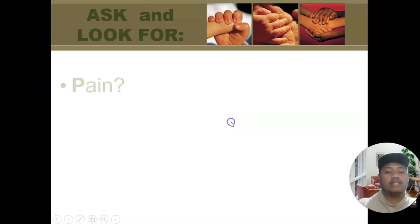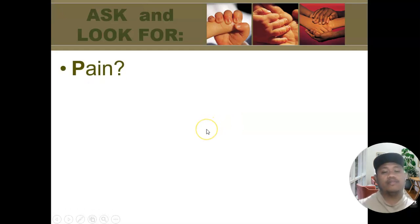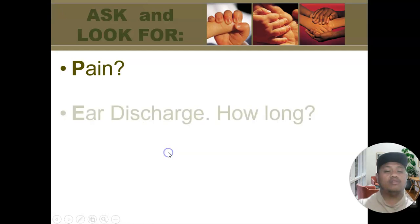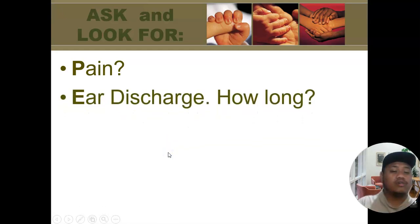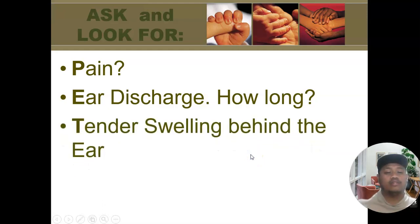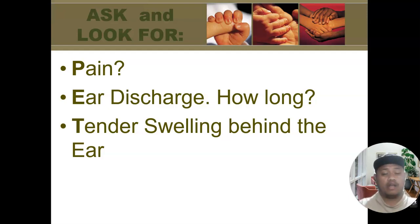Our mnemonic for ear assessment is PET. P stands for Pain — assess for the presence of pain, including PQRSD characteristics, location, and pain scale, if the child can provide that information. E stands for Ear discharge — check for any presence of pus coming out from the ear, and assess how long the condition has been present. T stands for Tender swelling — palpate and check for tender swelling behind the ear, as this may indicate infection.